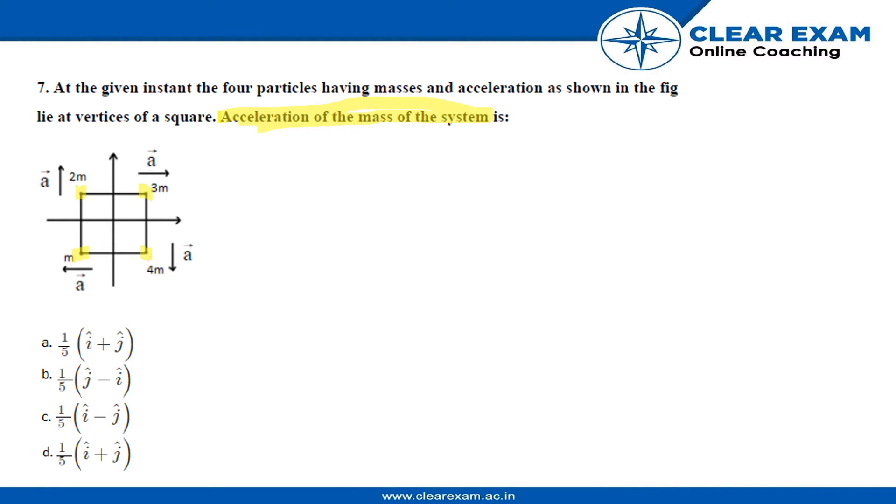So we have to calculate the acceleration of the mass of the system. We have to find out the acceleration of the complete system. Here we have acceleration and mass of the individual particles, but we have to find out acceleration of the total system.